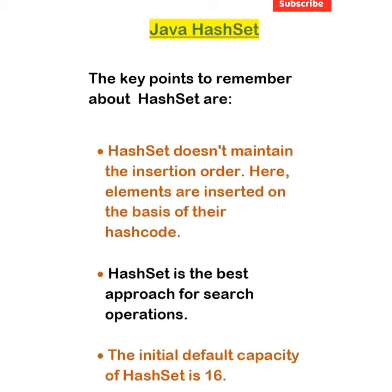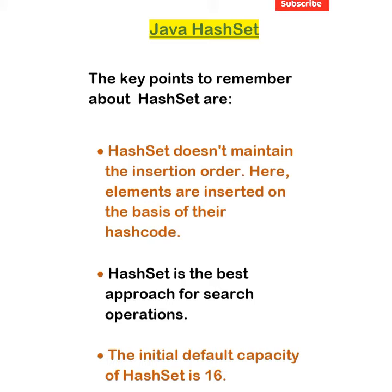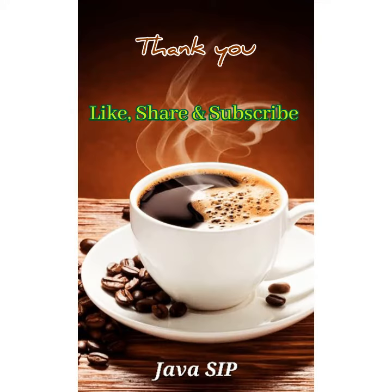To summarize: HashSet internally uses hashing, does not allow duplicate elements, allows null values, is non-synchronized, does not maintain insertion order, is the best collection for search operations, and its default size is 16.